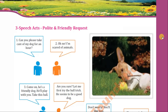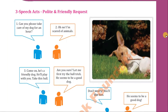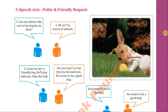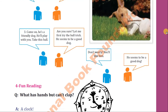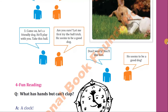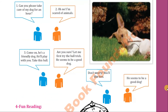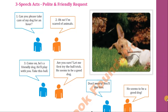Now we come to page number 19 — number one speech act: polite and friendly requests. You can practice this with a friend, brother, sister, or mother. Look at the dialogue: 'Can you please take care of my dog for an hour?' 'Oh no, I'm scared of animals.' 'Come on, he's a friendly dog. He'll play with you. Take this ball.' 'Are you sure? Let me first try the ball trick.' 'It seems to be a good dog — don't worry, you'll like him.' A picture of a dog is also given.